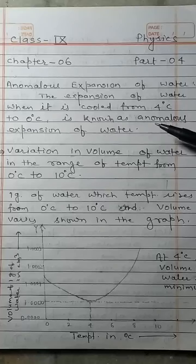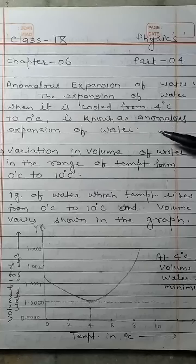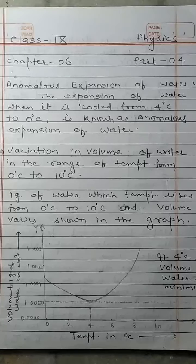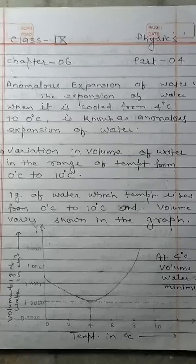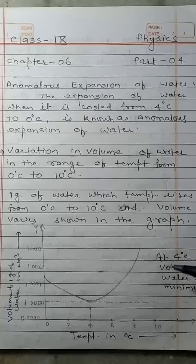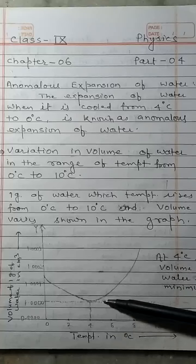The temperature range for anomalous expansion is 0°C to 4°C. Now we look at the variation in volume of water in the range of temperature from 0°C to 10°C. For 1 gram of water, as temperature rises from 0°C to 10°C, the variation of volume is shown in the graph.